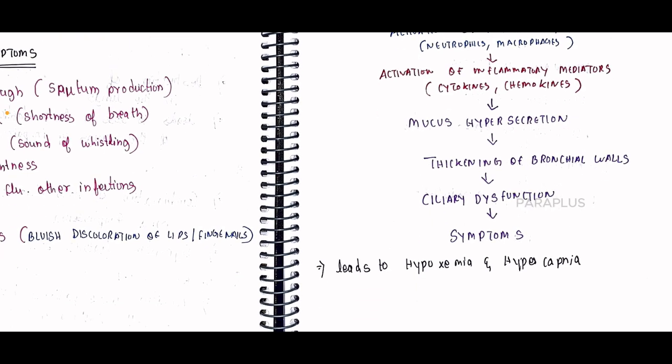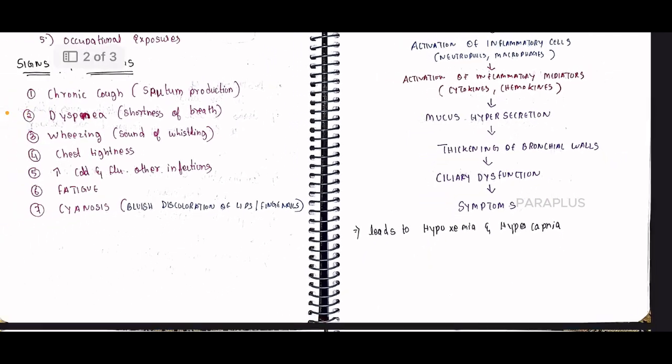Chronic bronchitis leads to hypoxia — not enough oxygen reaching cells and organs. It also leads to hypercapnia — excess carbon dioxide accumulation in the body, because CO2 cannot be properly expelled.